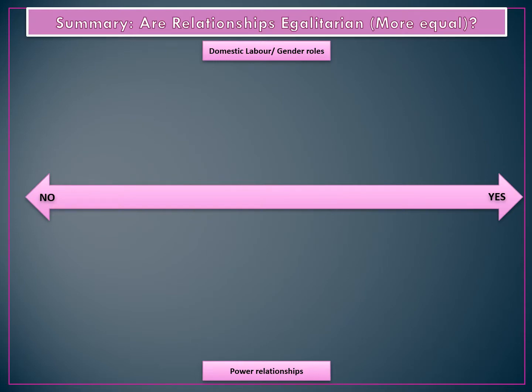Let's take a look at the key theories. We're going to look at whether relationships are egalitarian — that is, more equal. We'll examine this in two ways. The first argument is domestic division of labour, and we'll list all the theories and thinkers that say housework and domestic labour has become equal — this is to do with who is doing and taking on what job in the home.